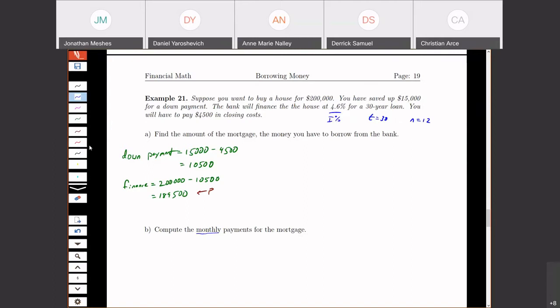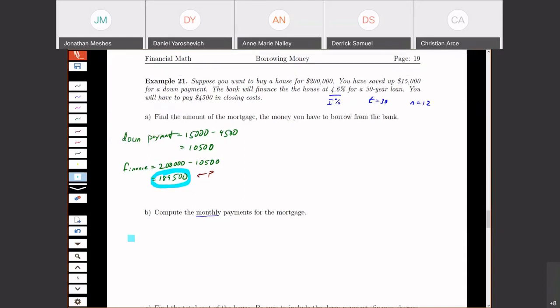So for this first part, the amount of money that we have to borrow from the bank is $189,500. So then if I want to compute my monthly mortgage payment, again, we can either use the formula. And I'll just write this down one last time, but I'm not even going to punch it into my calculator.